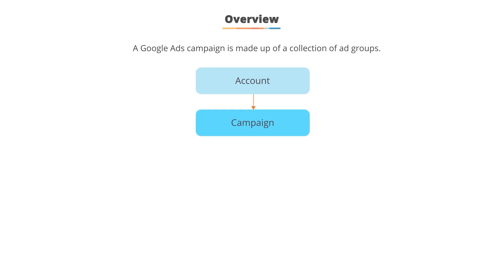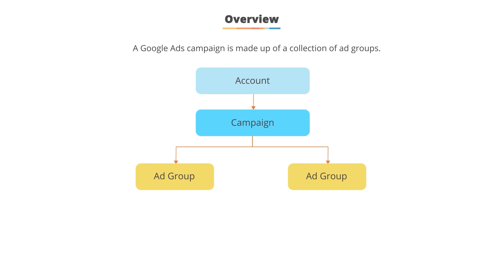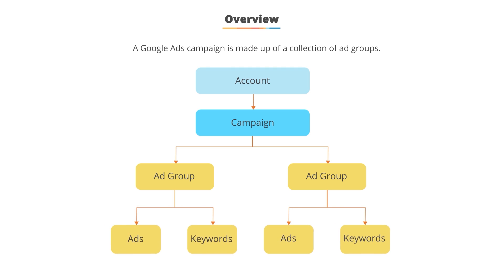Google Ads campaigns are made up of a collection of ad groups. The ad groups in the campaign inherit all the campaign settings, such as budget and location. In this video, you're going to learn how to create a campaign and use the appropriate settings for your search campaign.